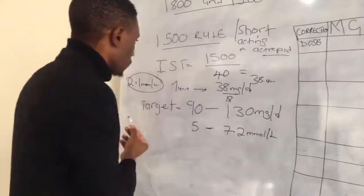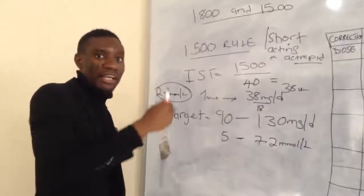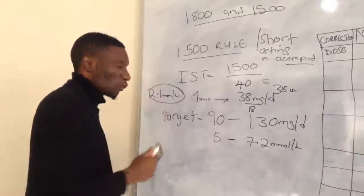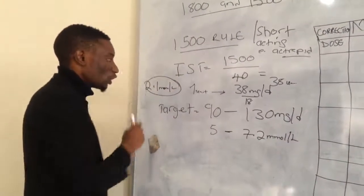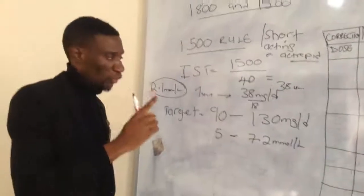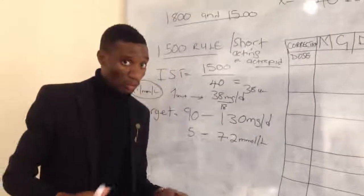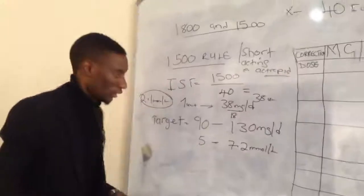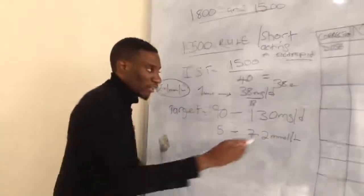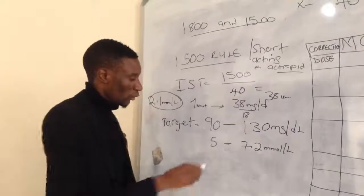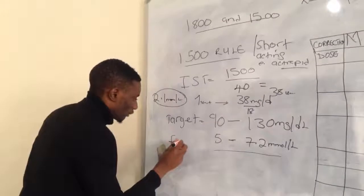So for this patient, one unit of insulin is able to reduce their blood sugar by 2.1 mmol/L. For example, if their sugar level is 8.1 mmol/L and they get one unit of insulin, it will drop to approximately 6.0 mmol/L. Our target range for diabetic patients is 90–130 mg/dL, which converts to 5.0–7.2 mmol/L.